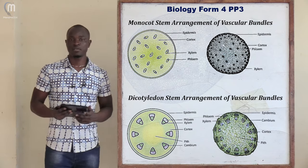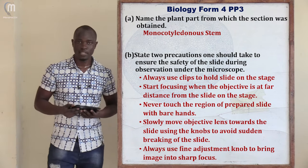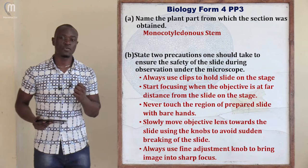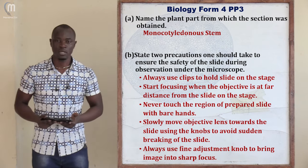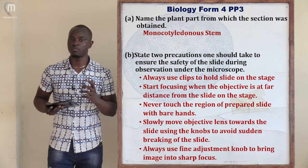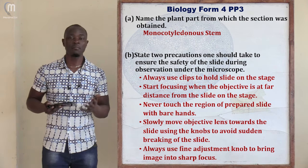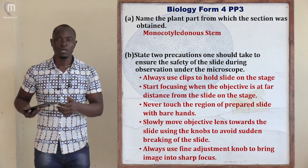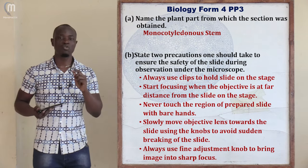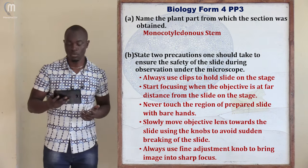Part C asks: name the plant part from which this section was obtained. This section was obtained from a monocotyledonii stem. If you only say 'stem,' you will get it wrong, because dicots also possess a stem. You must be specific and state it is obtained from a monocotyledonii stem — then you are correct.